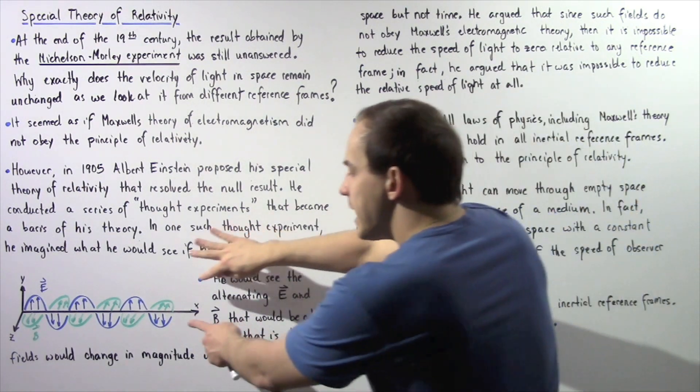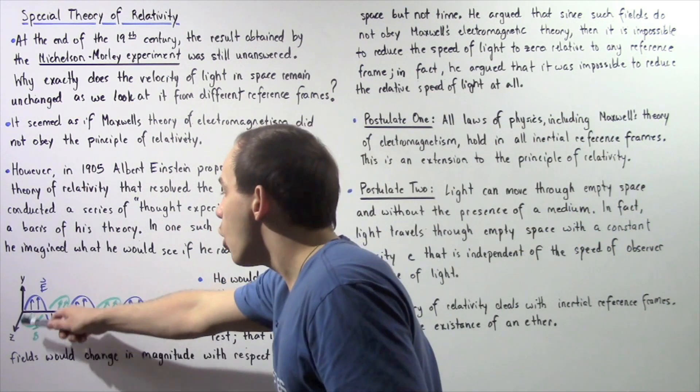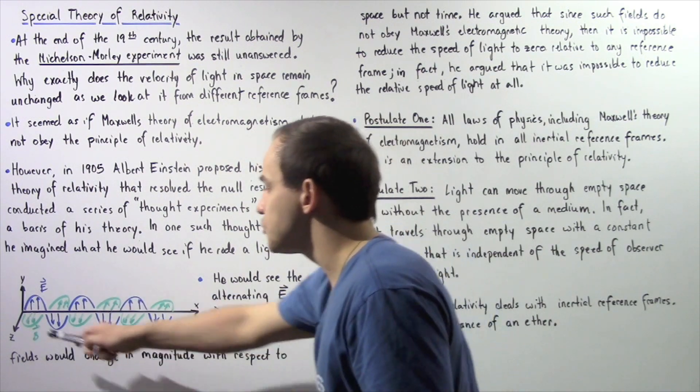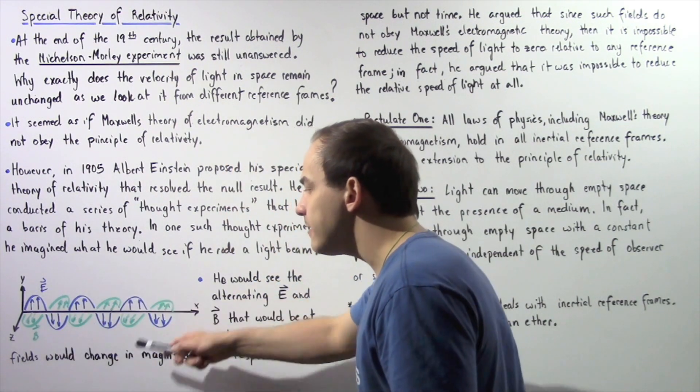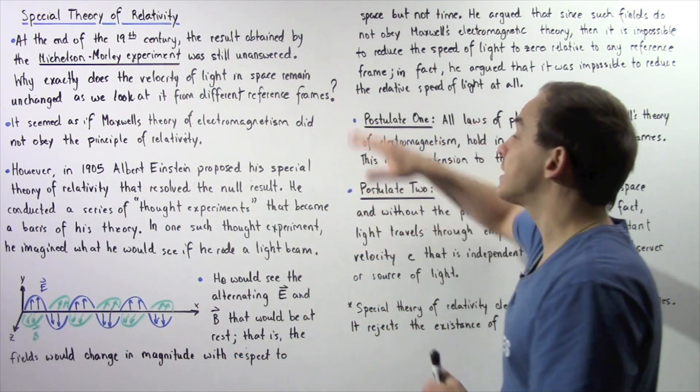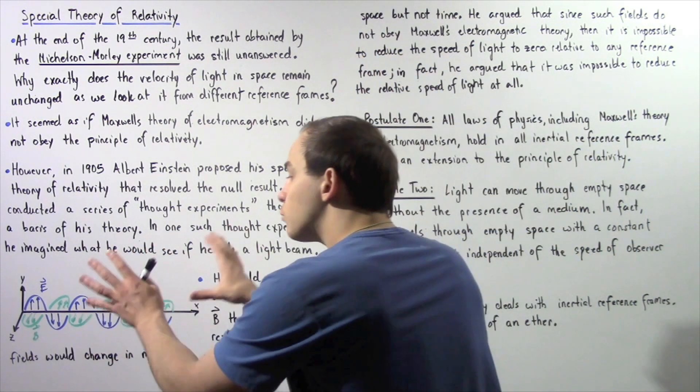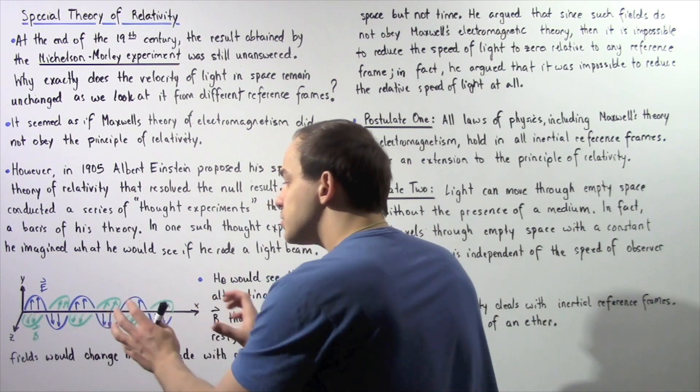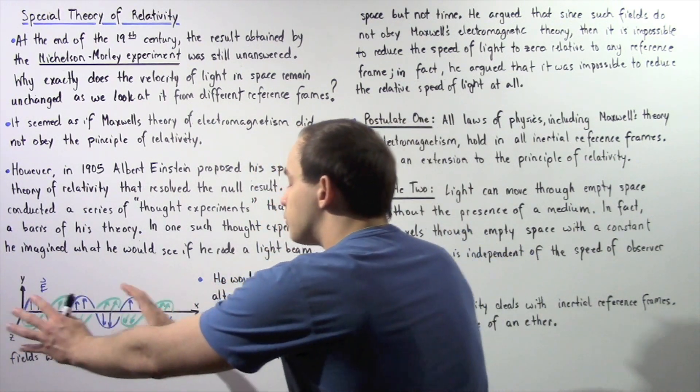And that is shown in the following diagram. We have alternating electric fields and alternating magnetic fields that are changing in magnitude with respect to space. But they are remaining stationary. This wave is not moving left or right. It is stationary with respect to time.